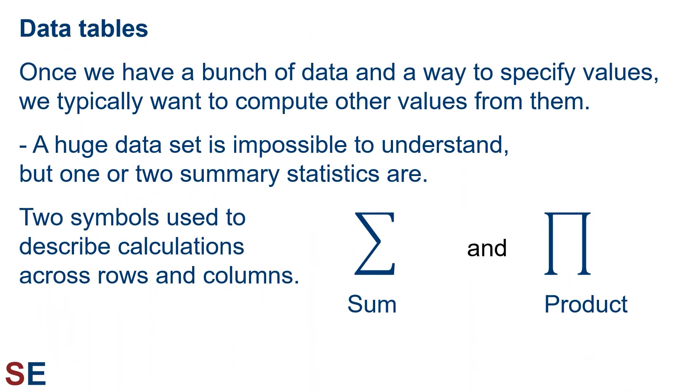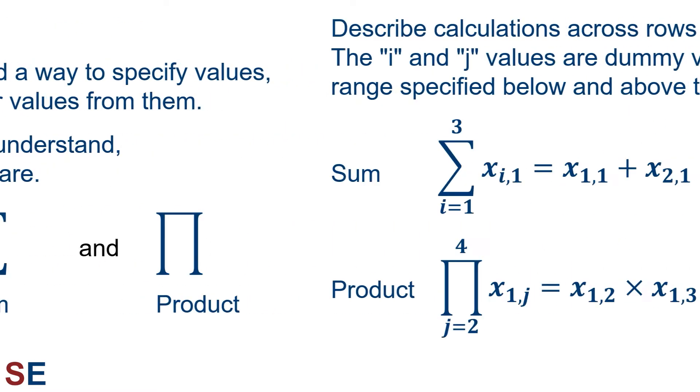Once we have a bunch of data in a table, and a way to specify values within that table, we typically want to compute other values from them. This is because a huge data set is impossible to understand since there are too many numbers, but just one or two summary statistics are easier to understand. Two symbols are commonly used to describe calculations across rows and columns. The capital Greek sigma symbol is used to represent a sum, and the capital Greek pi symbol is used to represent a product.